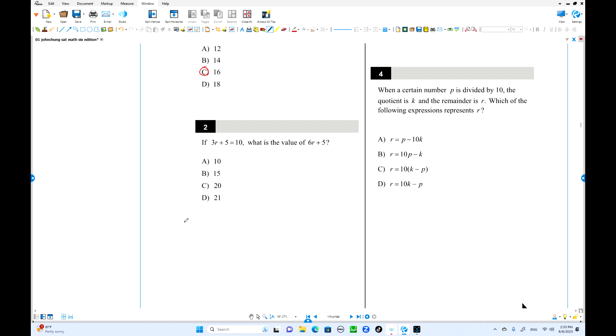Number two: 3R plus 5 equals 10. What is the value of 6R plus 5? You know that 3R equals, minus 5 both sides, is going to be 5. So twice of this one is 10, so 6R equals 10. Put this number there, 10 plus 5 equals 15. The answer is B.